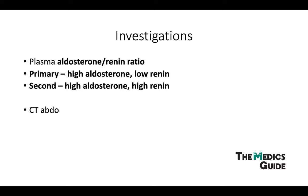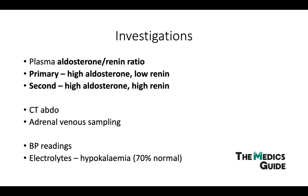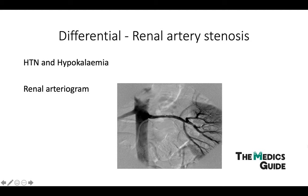If the picture fits primary hyperaldosteronism, we could do a CT abdomen to look for adrenal masses, and we can also do adrenal venous sampling. It's also important to check blood pressure, which we'd expect to be quite high, and electrolyte levels — though in the majority of real-life cases these are normal. A differential to always consider is renal artery stenosis, which also presents with hypertension and hypokalemia; a renal arteriogram can help identify the problem.